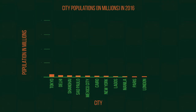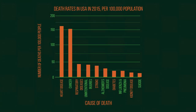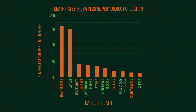Bar graphs are used to compare the amounts or frequencies of different things — for comparing different populations or frequencies. The taller the bar, the higher the frequency. Heart disease and cancer clearly cause many more deaths than anything else does.